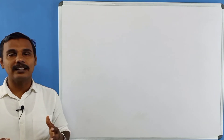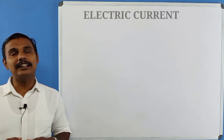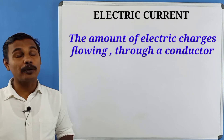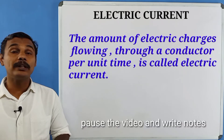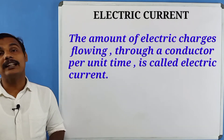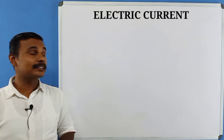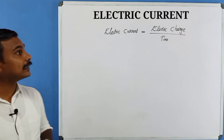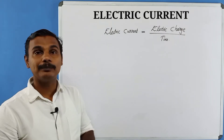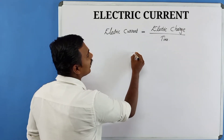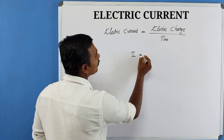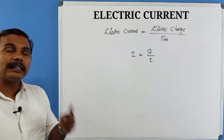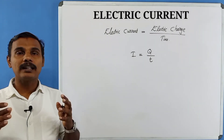We will define what we call electric current. The amount of charges flowing through a conductor per unit time is called electric current. Mathematically, electric current is equal to electric charge divided by time. Electric charge is Q, time is T, and electric current I is equal to Q by T.